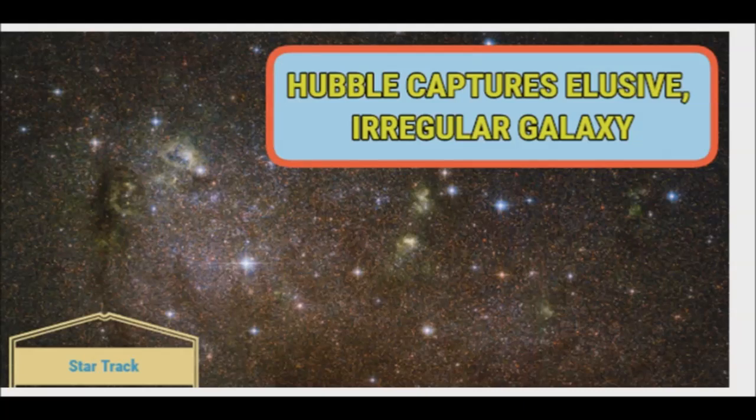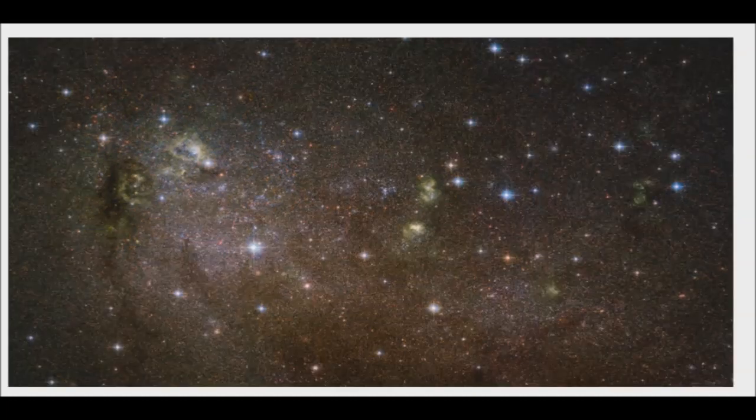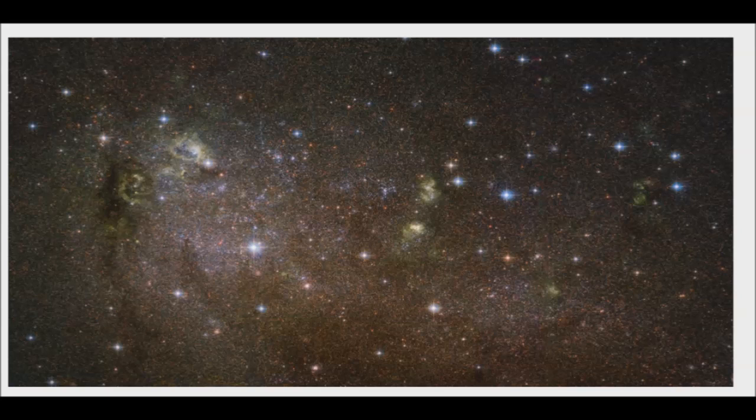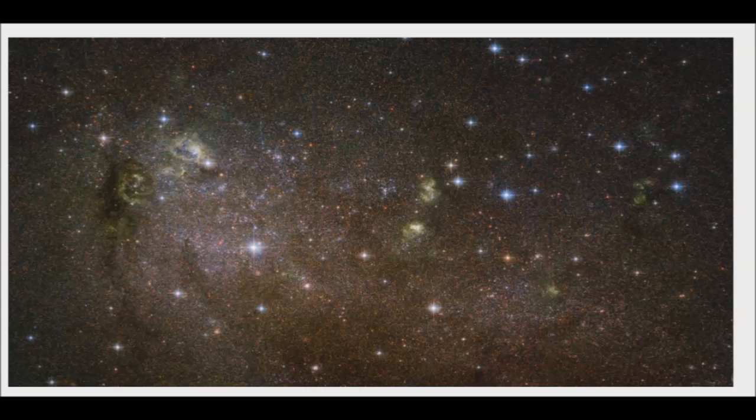Hubble captures elusive irregular galaxy as reported by NASA. This image shows an irregular galaxy named IC-10, a member of the local group, a collection of over 50 galaxies in our cosmic neighborhood that includes the Milky Way.